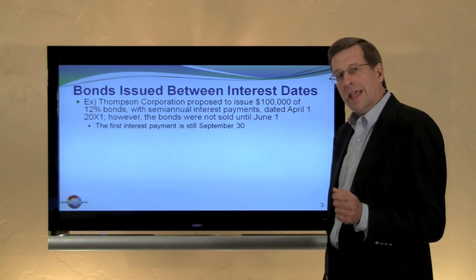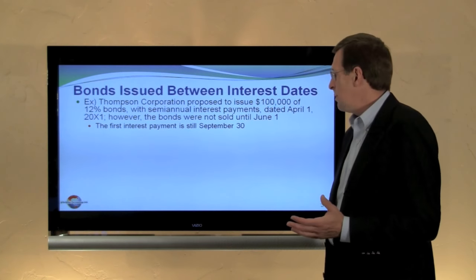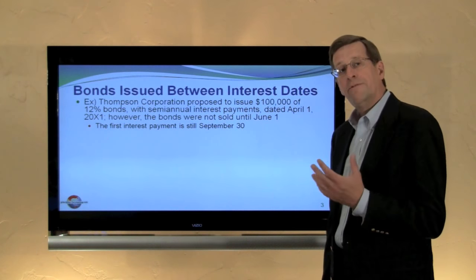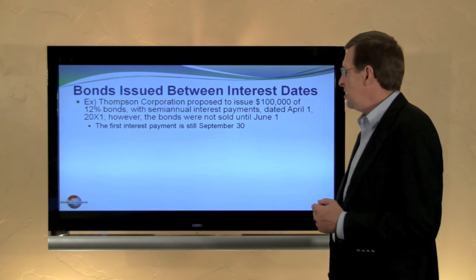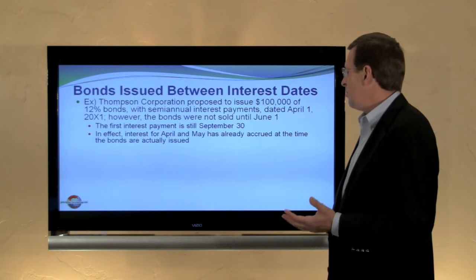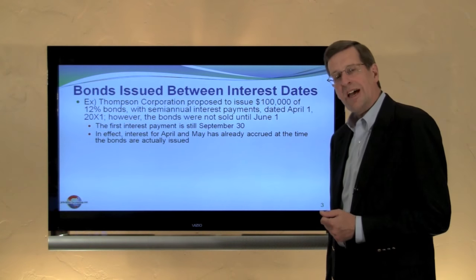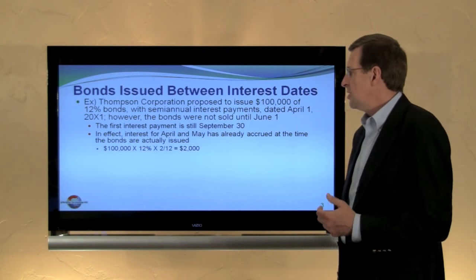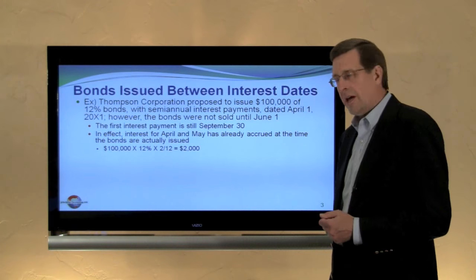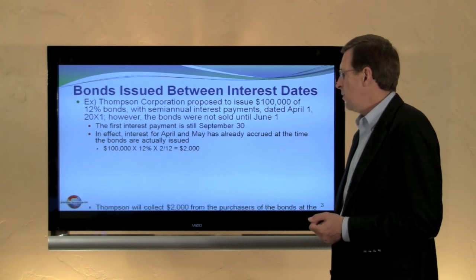Nevertheless, the first interest payment is going to occur on September 30th, six months after the date of the bonds and four months after the issuance of the bonds. In effect, interest for April and May has already accrued at the time the bonds are issued. That calculates to $2,000 — $100,000 times 12% times two-twelfths.